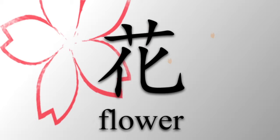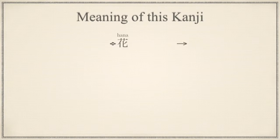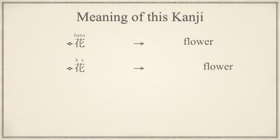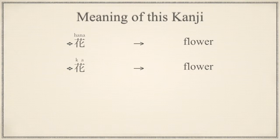This time, there are cases when kanji will have different meanings and be written differently depending on how words are combined. HANA is the meaning of flower. KA is also the meaning of flower. It is used as HANA in many cases, but there is such a change in pronunciation depending on the combination.